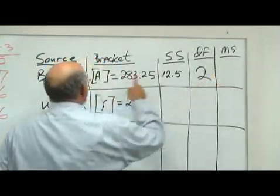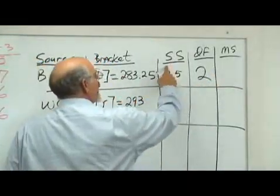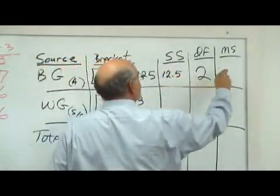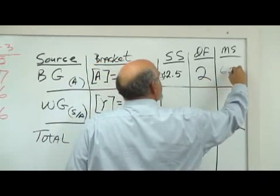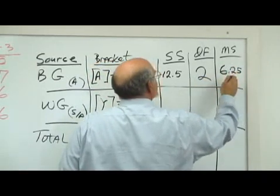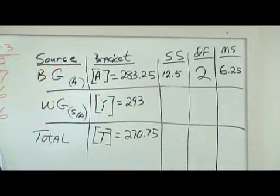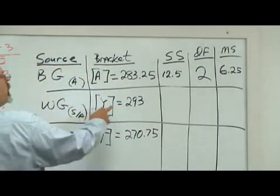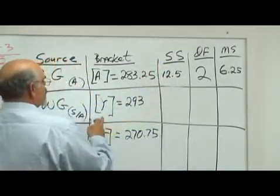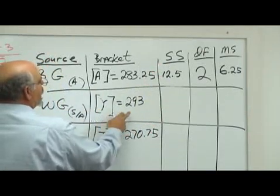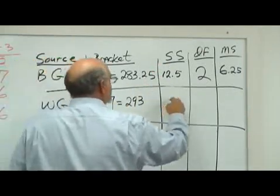The mean square for the between groups is the sum of squares divided by the degrees of freedom. That looks like 6.25, and that looks like 6.25, 6.25. The within group sum of squares is Y minus A. That looks like 9.75.